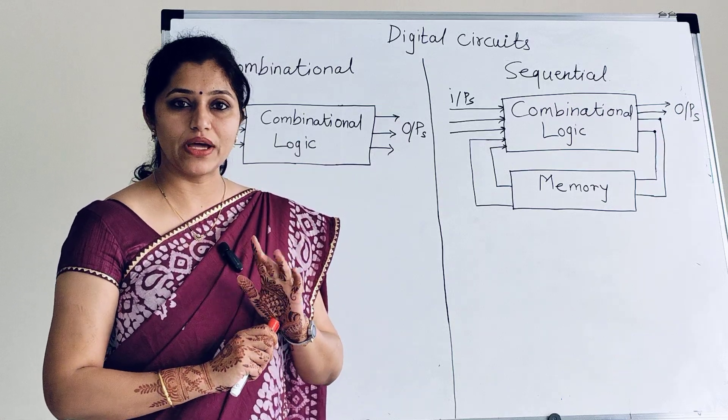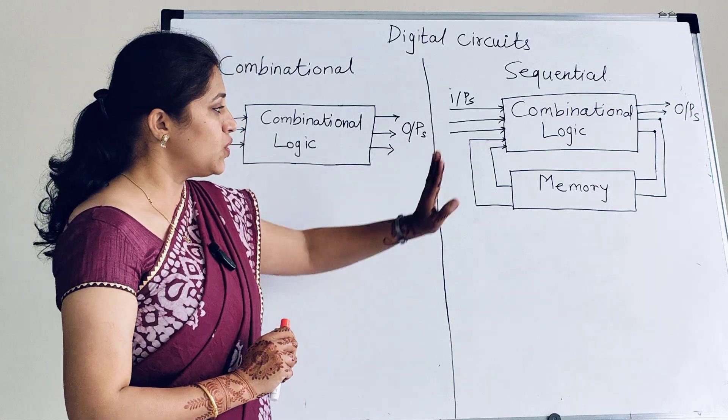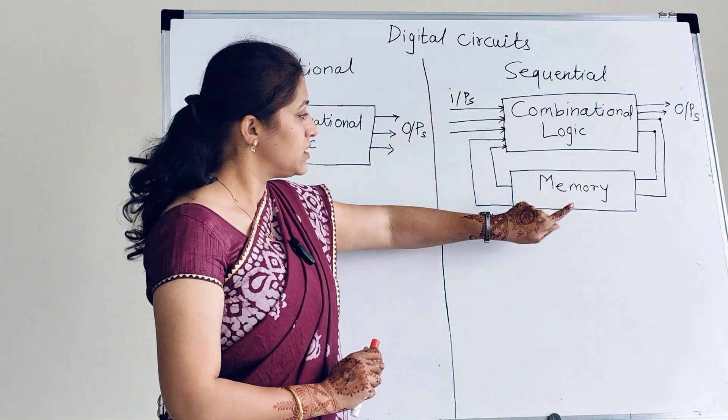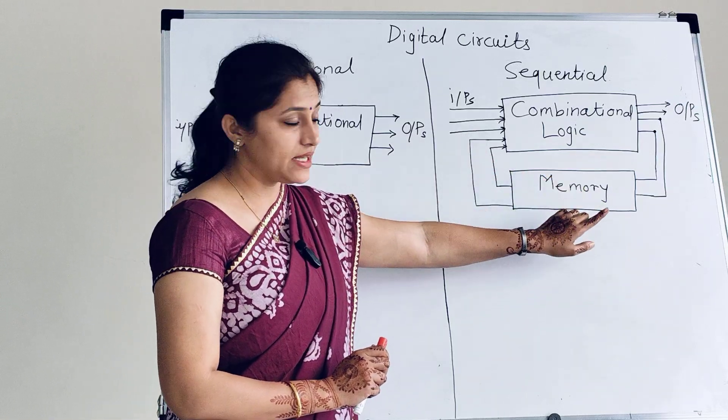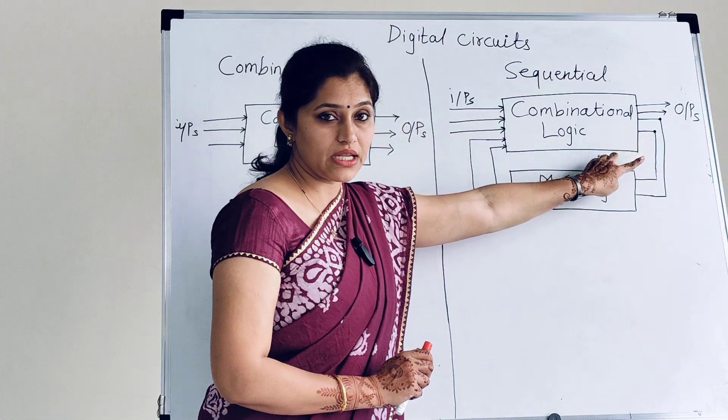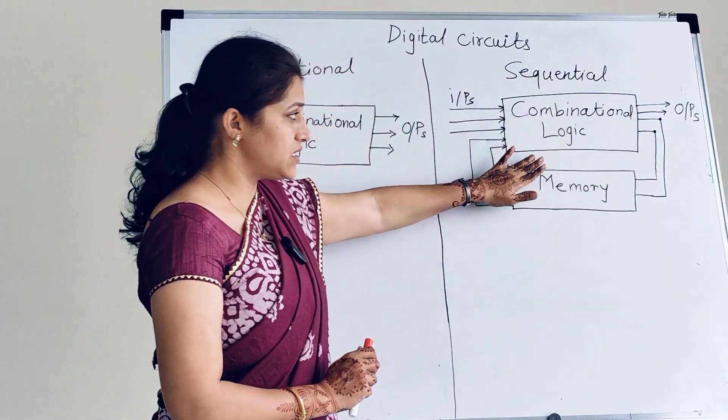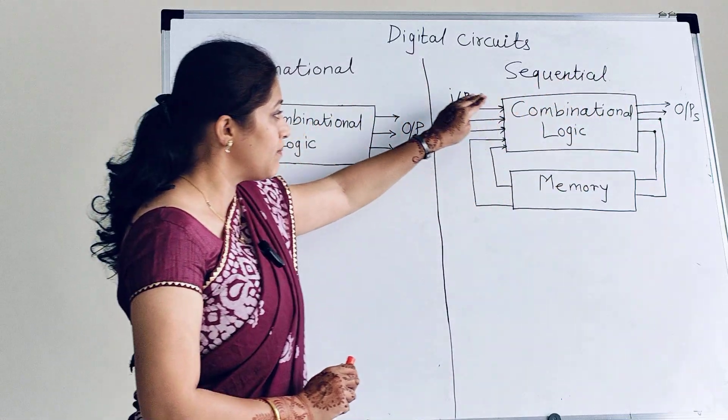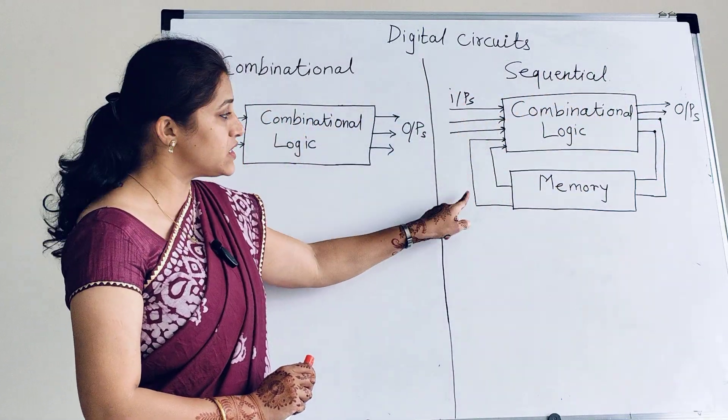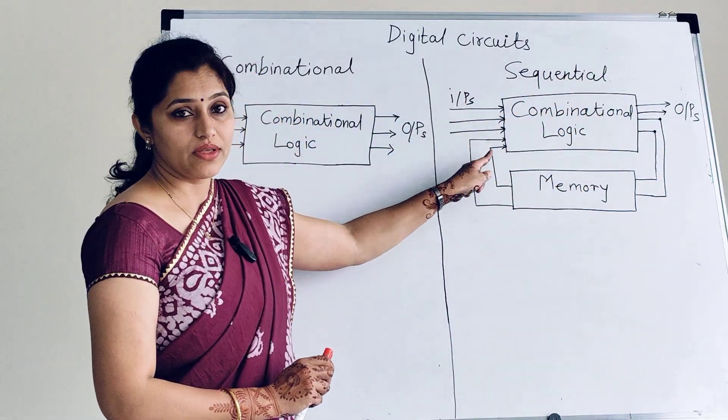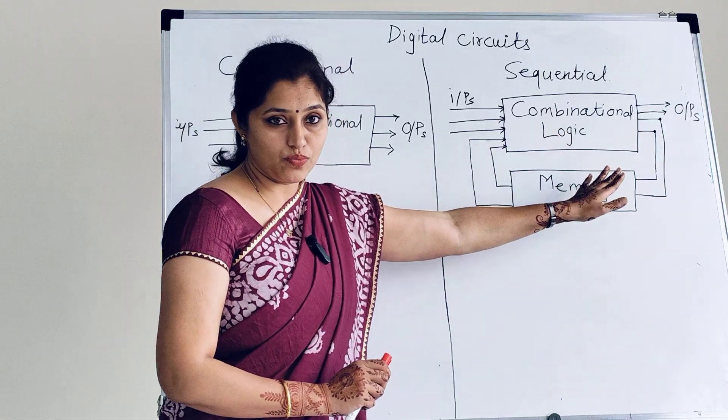1-bit flip-flop can store 1-bit data. So here in feedback path, the memory elements are connected to store previous data or previous output. In sequential circuits, output depends on present external inputs as well as internal inputs, that is previous outputs.